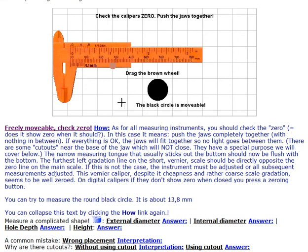We check this one by closing it completely, and if the zero line is on the zero there, then things are okay. Otherwise, you have to record what could be wrong with it. On the digital ones, there's a zeroing button so that you can zero it if it's not showing zero.